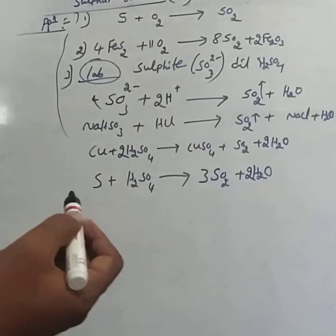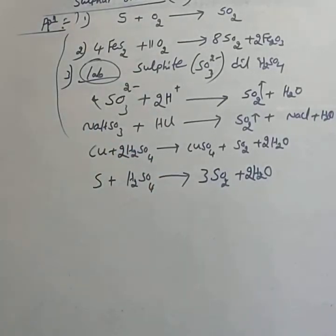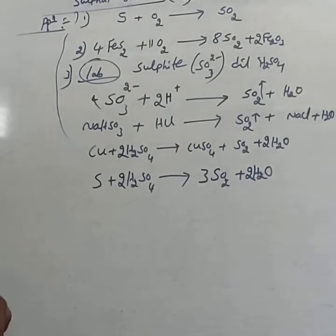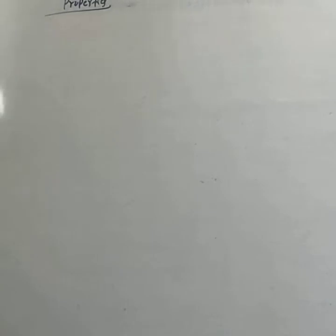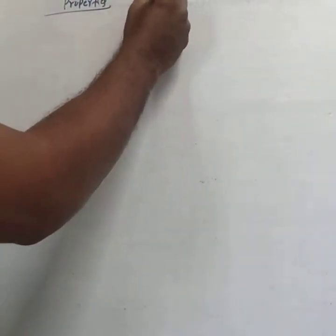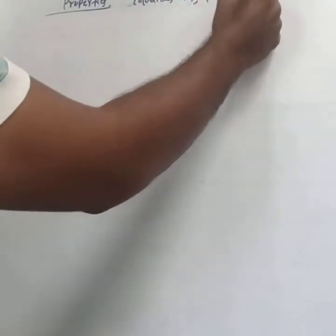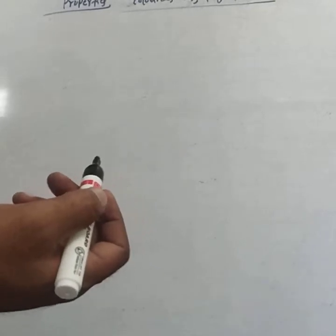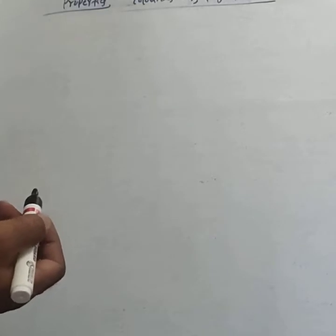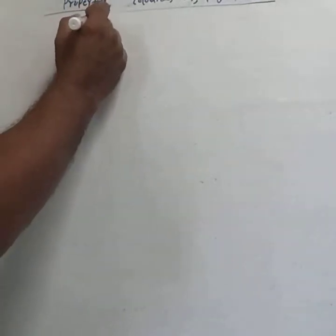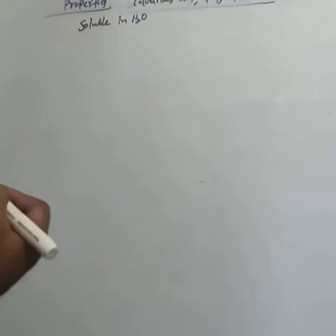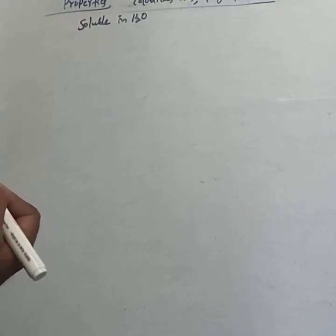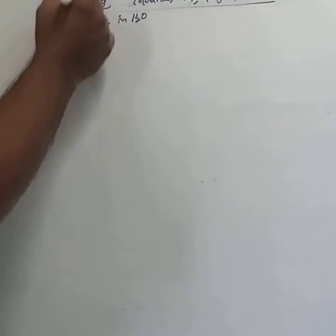This is about the preparation of sulfur dioxide. Now consider the properties of sulfur dioxide. Sulfur dioxide is a colorless gas with a pungent odor. It is easily soluble in water. It can be liquefied at room temperature. These are the physical properties.